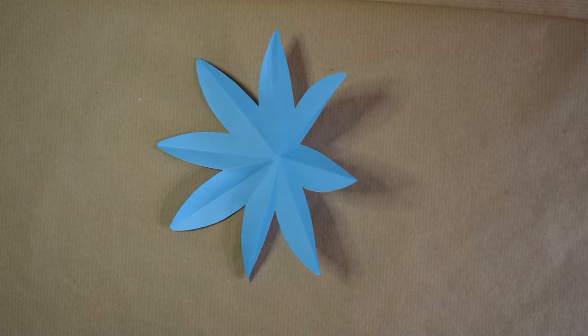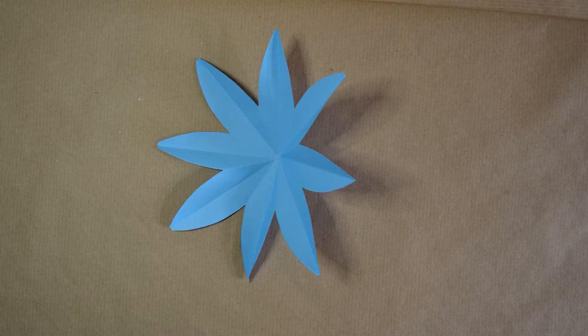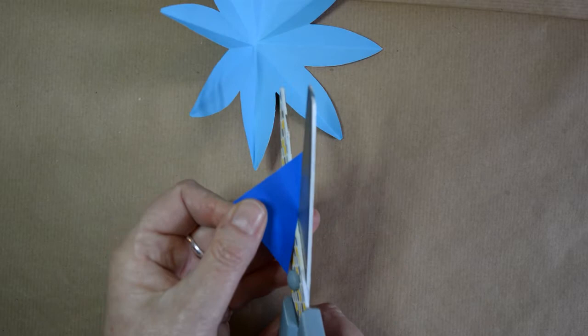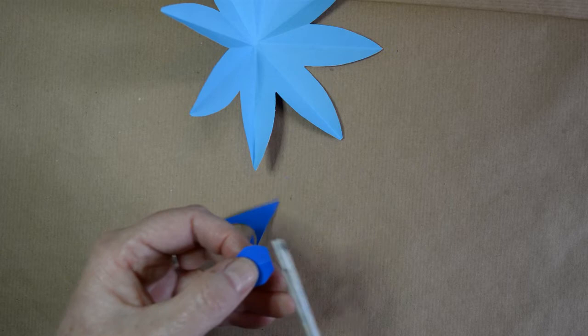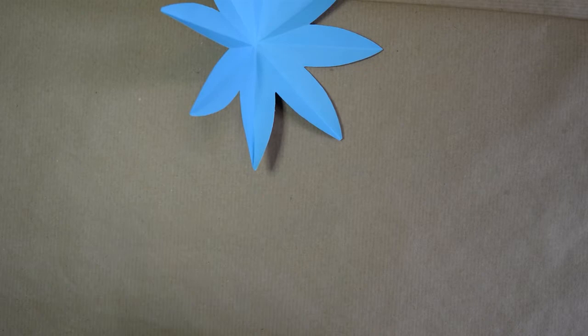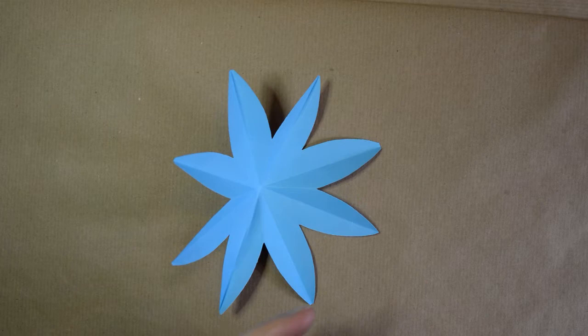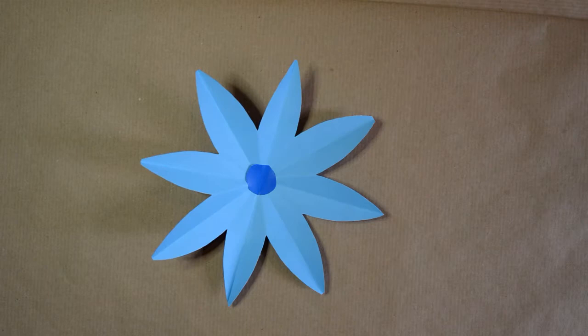The next thing to do is to make the centre of your flower. To do that you need a contrasting piece of paper. I'm going to use one of the little triangles that I cut off. I'm just going to try to cut it freehand, trying to draw something that's circular. I'm moving the paper rather than the scissors. And then using a bit of glue stick I'm going to stick that in the centre of my flower.